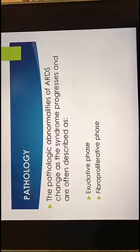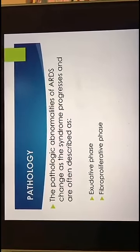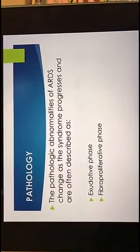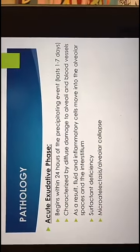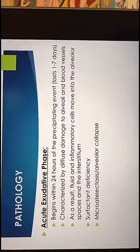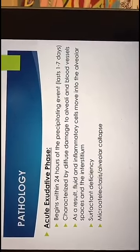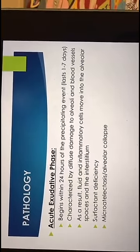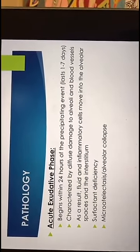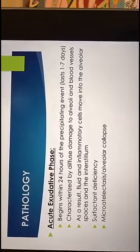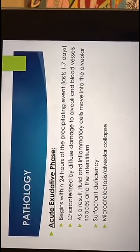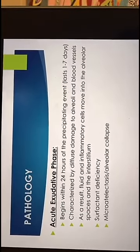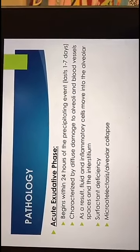The pathologic abnormalities of ARDS are described as exudative phase and fibroproliferative phase. Acute exudative phase begins within 24 hours of the onset of the primary cause of ARDS and it continues one to seven days. It's characterized by diffused damage to alveoli and blood vessels and that results in fluid and inflammatory cells moving into alveolar spaces and interstitium.